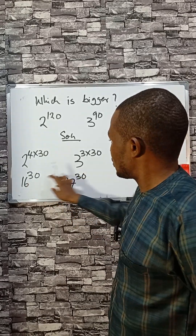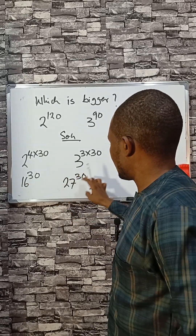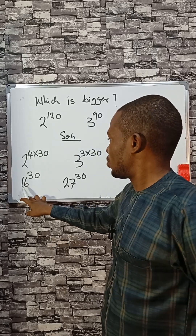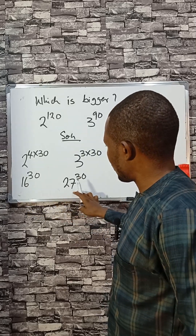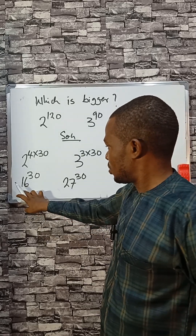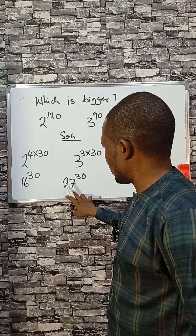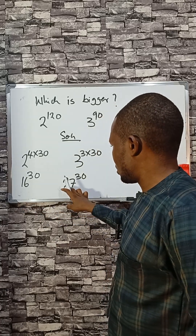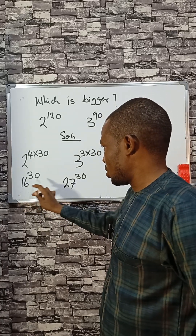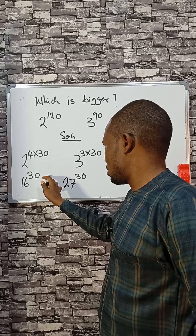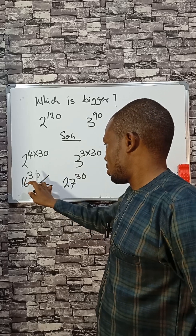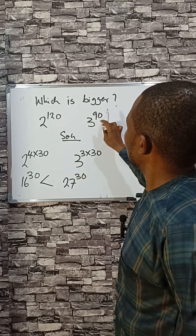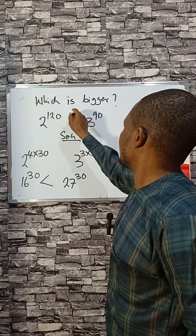They have the same power but the bases are different. This one is 27 and this one is 16, so of course 27 raised by 30 is bigger than 16 raised by 30. That means 3 raised by 90 is greater than 2 raised by 120, so this inequality is correct.